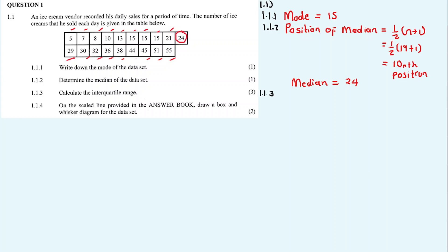1.1.3: calculate the interquartile range. The IQR is equal to Q3 subtract Q1 — the upper quartile subtracted by the lower quartile. The median divides the data into two equal parts: the lower part is Q1 and the upper part is Q3.